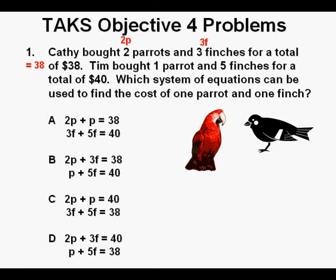And here is what those two variables equaling $38 are in evidence in answer B. And for the next sentence, we have 1P or P plus 5F equal to 40. And that equation is also found in answer B.